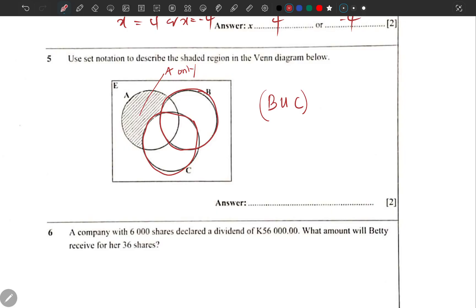What is shaded is A only. This part is shaded, A only. How do we represent A only?